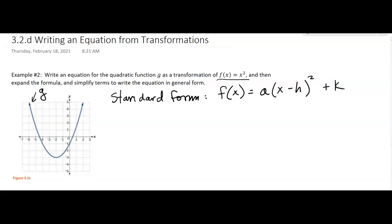Now we know where the vertex is, we can see that. It's right there, and it looks like it's the point negative 2, comma negative 3. So I'm going to put those in for h, k.